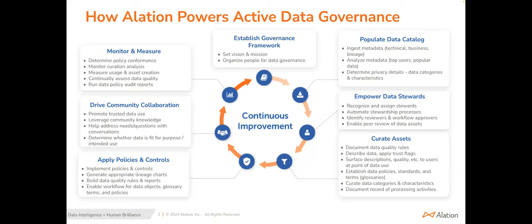By establishing a clear scope for your initial governance activities, you'll be able to implement your program with measurable outcomes and improve your processes with each new use case. The next step is to start populating your data catalog with data from your use case — connecting your source, ingesting technical metadata, the structural information, the lineage data. After that, you need to identify and empower your data stewards. You can analyze the usage data ingested into your catalog and identify the top users of different data sets, as these are often ideal data stewards.